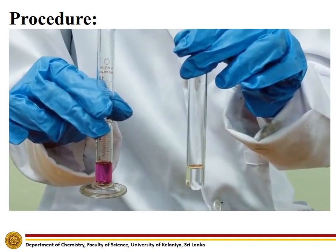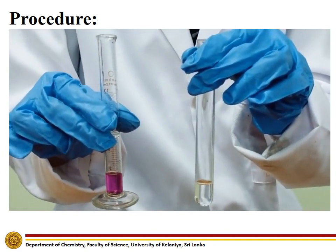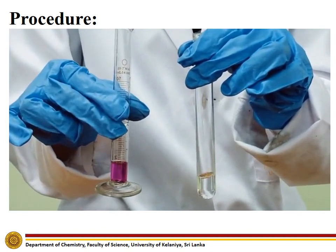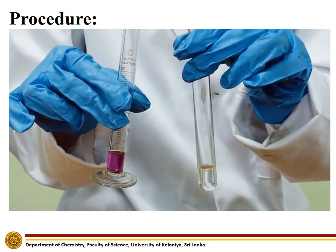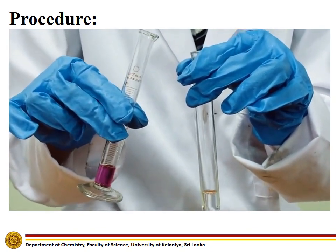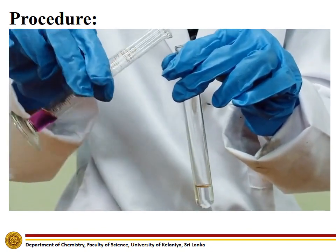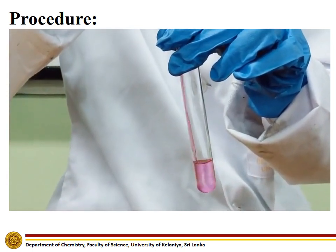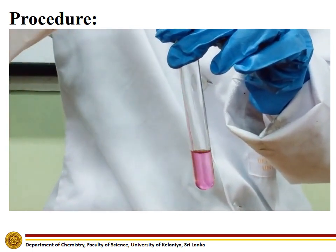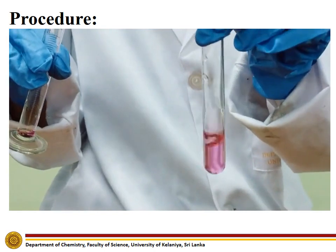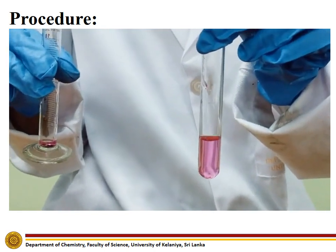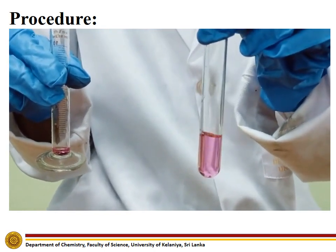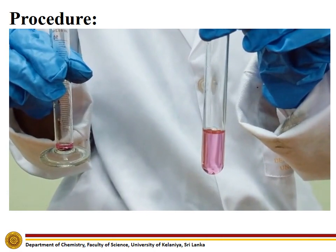To carry out the fifth experiment, add acidified potassium permanganate and observe whether a color change occurs. No color change is observed.